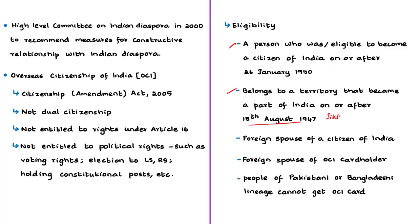Examples of territories that became part of India after independence include Sikkim, Puducherry, Dadra and Nagar Haveli, Goa, and Daman and Diu. Minor children of these citizens are also eligible. The spouse of a citizen of India of foreign origin, or the foreign-origin spouse of an OCI cardholder, is also eligible to register. Importantly, people of Pakistani and Bangladeshi origin are not eligible to get an OCI card.